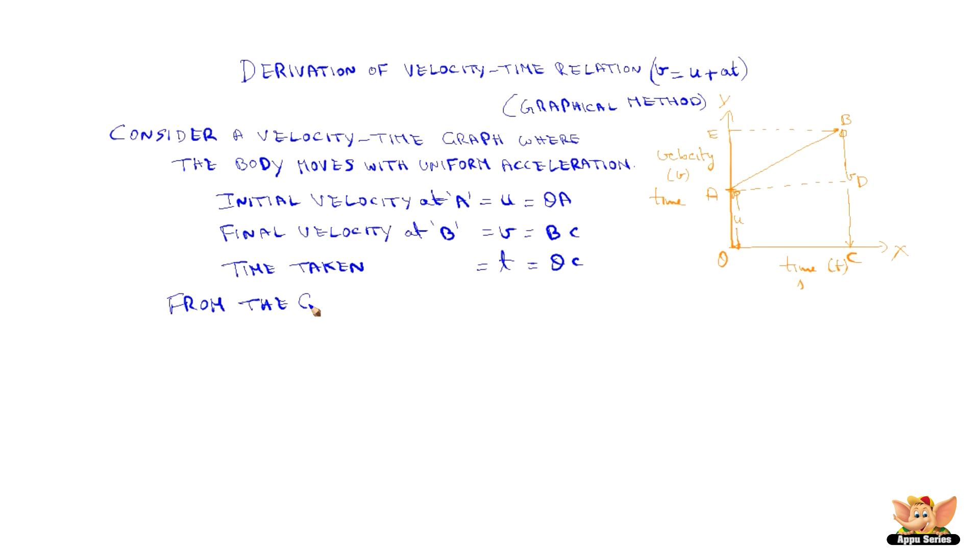From the graph, we know that BC is equal to BD plus DC. Now, this can be written as BD plus OA.